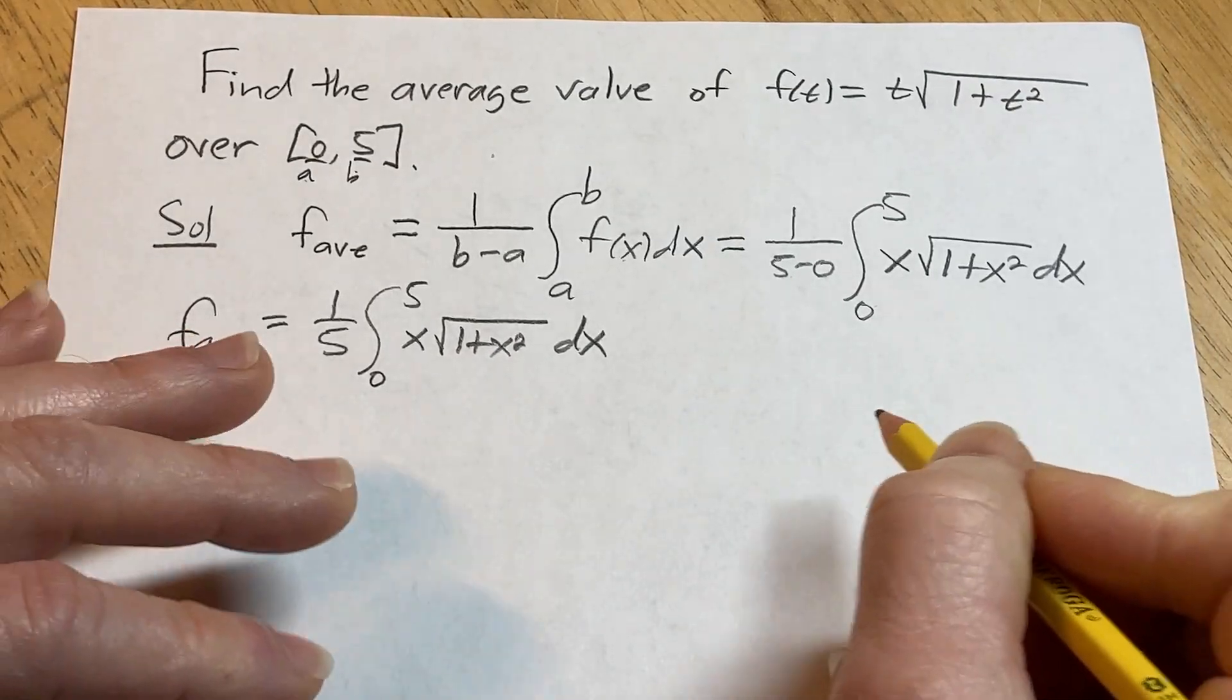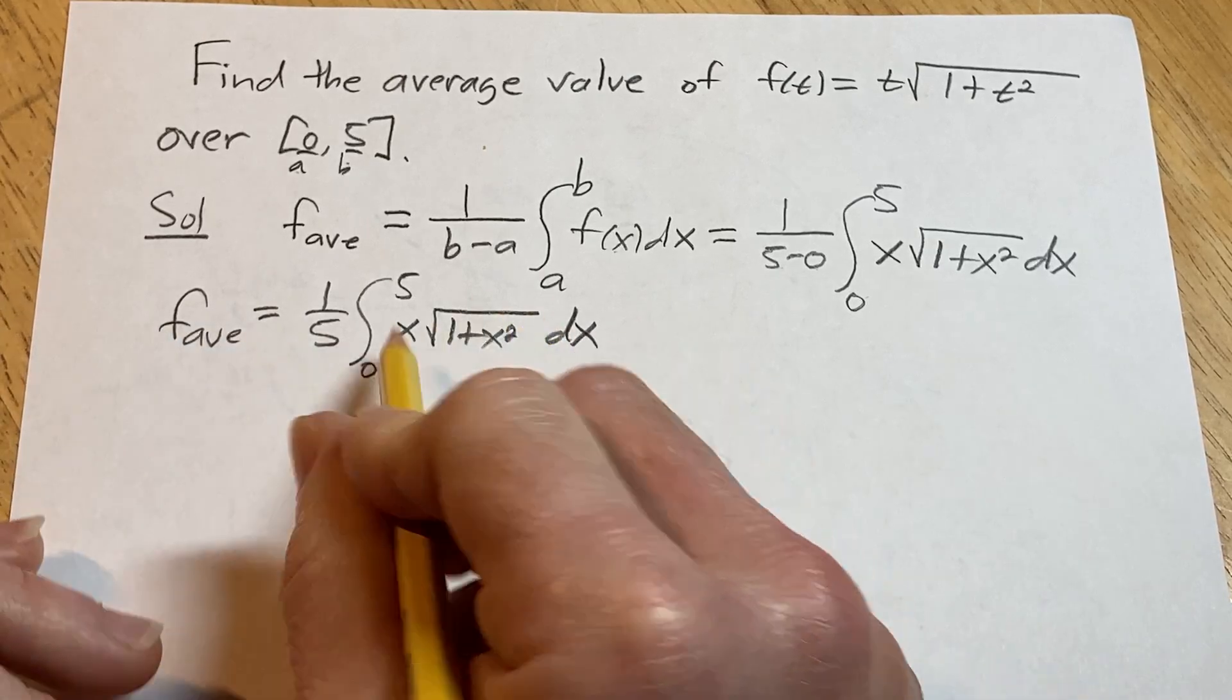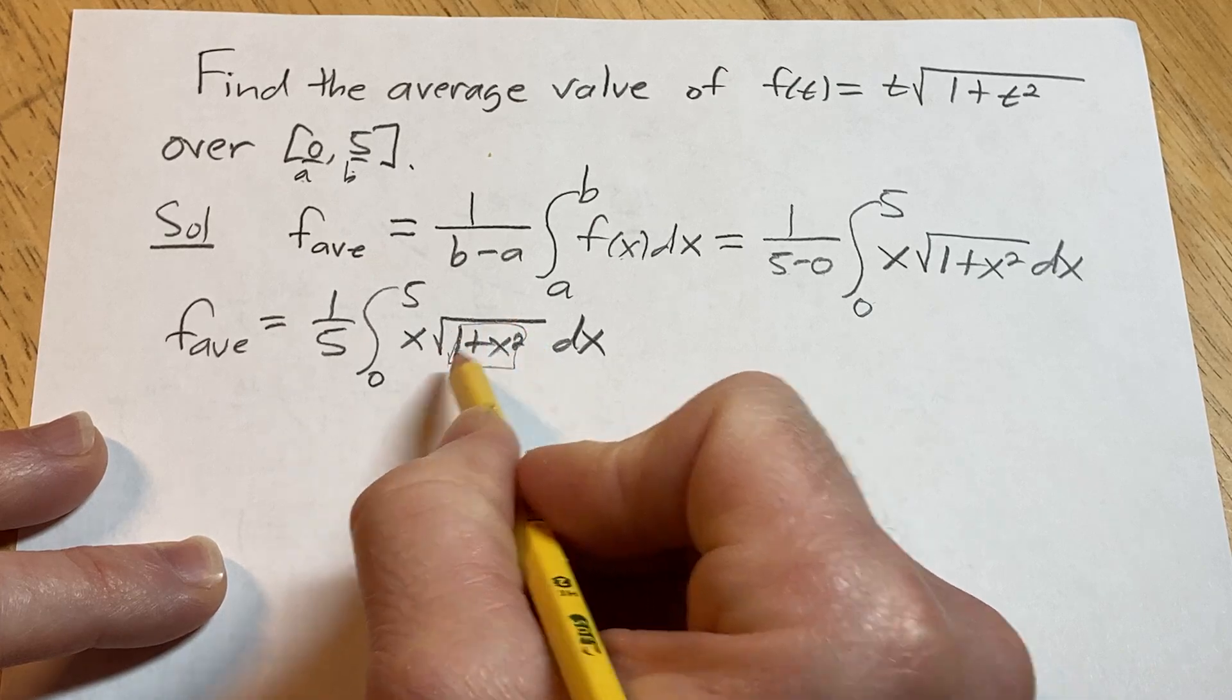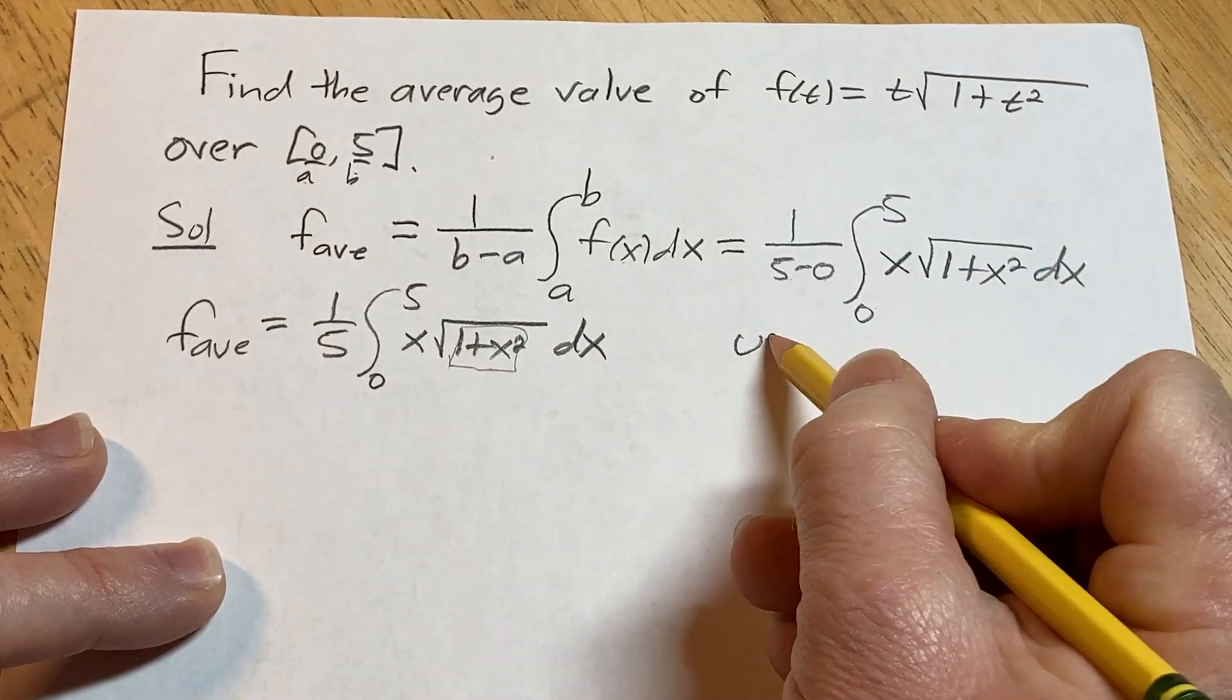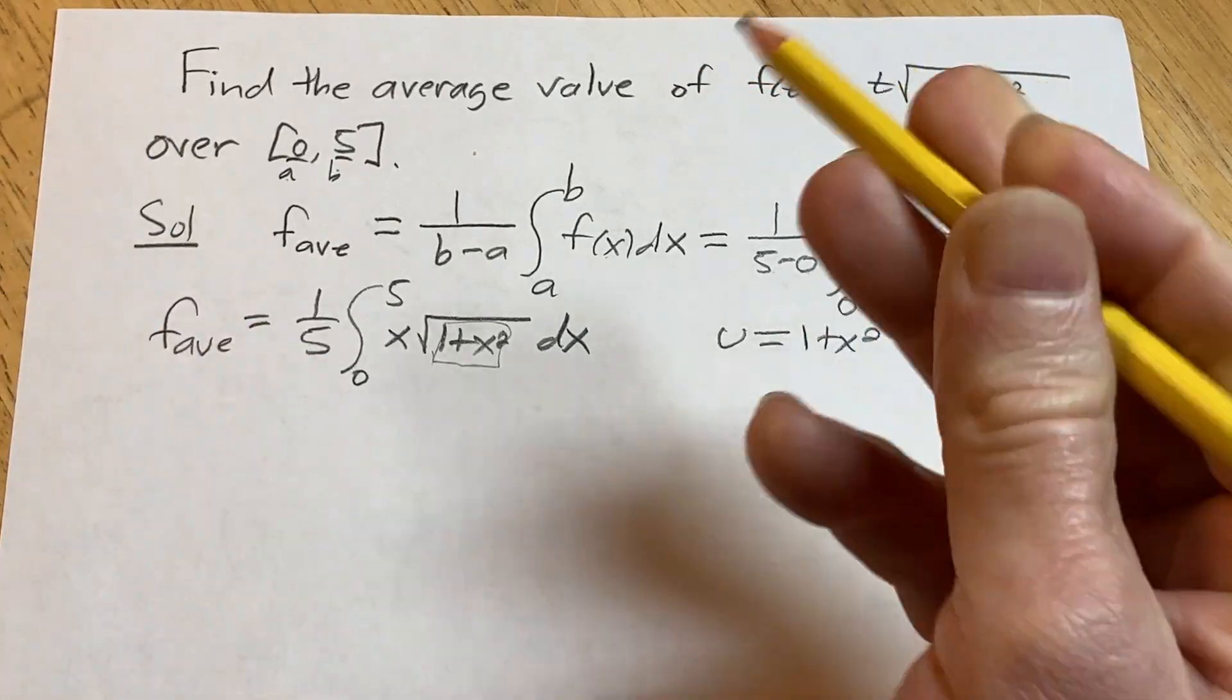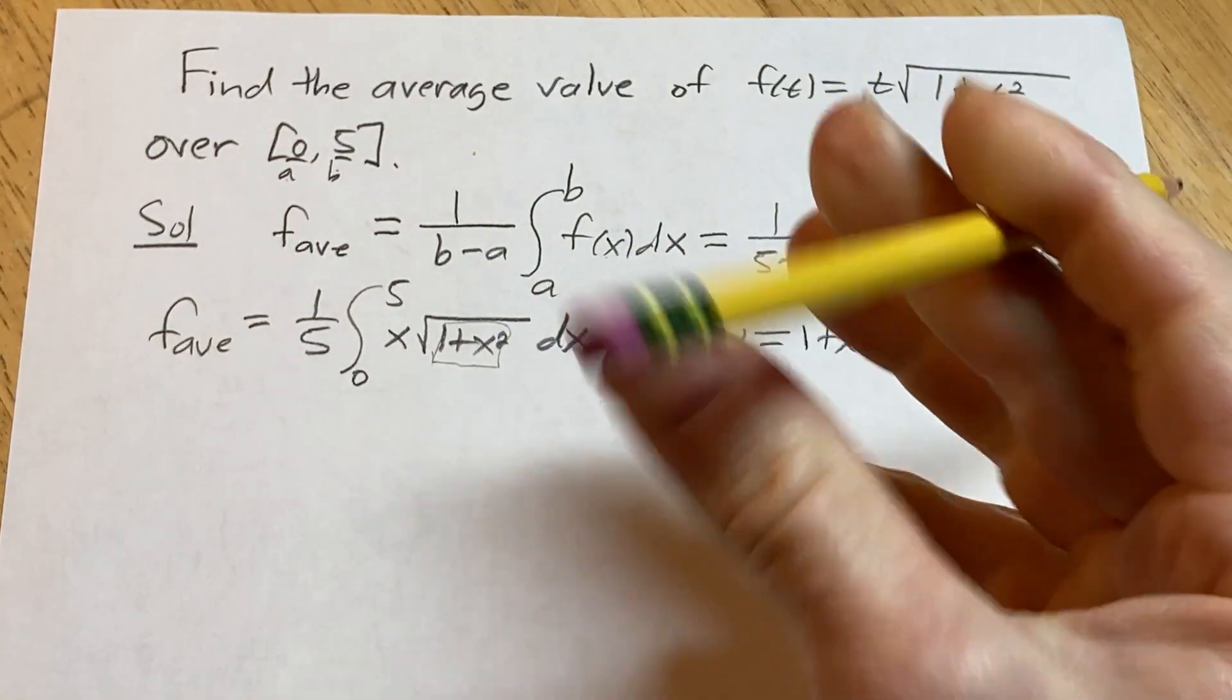Okay, so now we're going to make a substitution in order to do this problem. And the reason we're going to do that is because this is just not a familiar formula. So we're going to let u be the inside piece, the piece inside the square root. So u is equal to 1 plus x squared. My pencil is going a little bit dull here, so I'm going to take a three and a half second break to sharpen it.